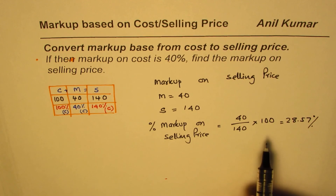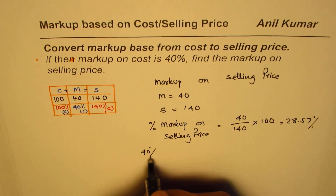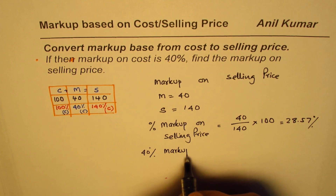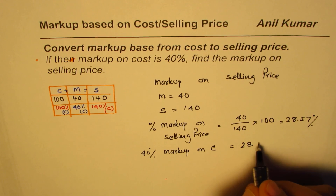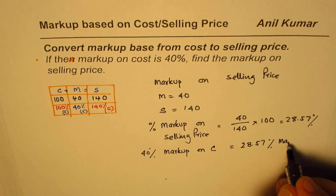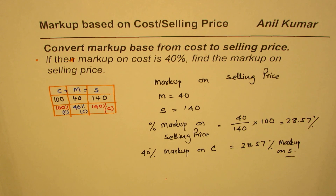So 40% markup on cost price equals 28.57% markup on sales. That is how we can convert the markup from the base of cost to the base of selling price. This kind of data can always be used to simplify solutions. I'm Anil Kumar — I hope that helps. Thank you and all the best.